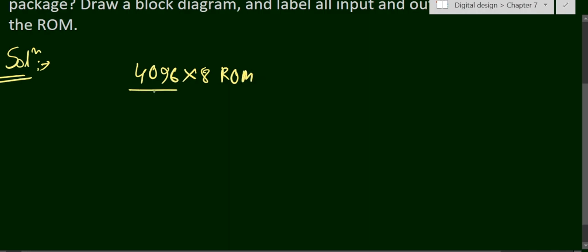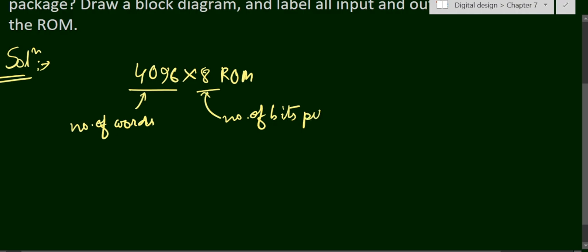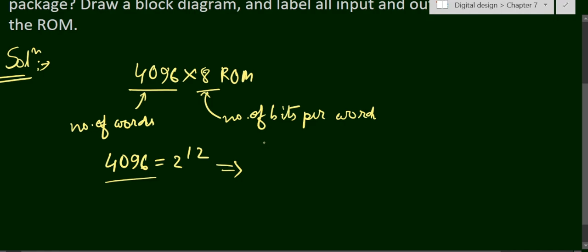Here we are given a 4096 into 8 ROM unit. The 4096 represents the number of words and 8 represents the number of bits per word. This ROM can store 4096 words. Since 4096 equals 2 to the power 12, for selecting 4096 memory addresses we need 12 input lines in the internal decoder.